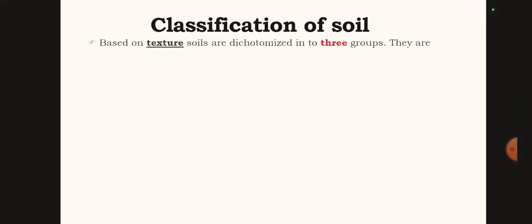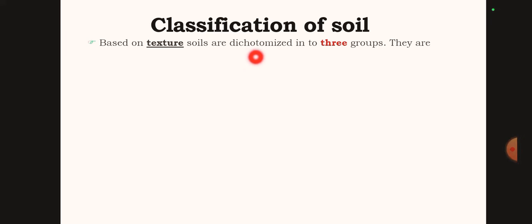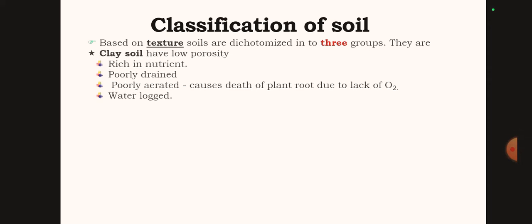Classification of soil: based on texture, soils are categorized into three groups. The first one is clay soil.